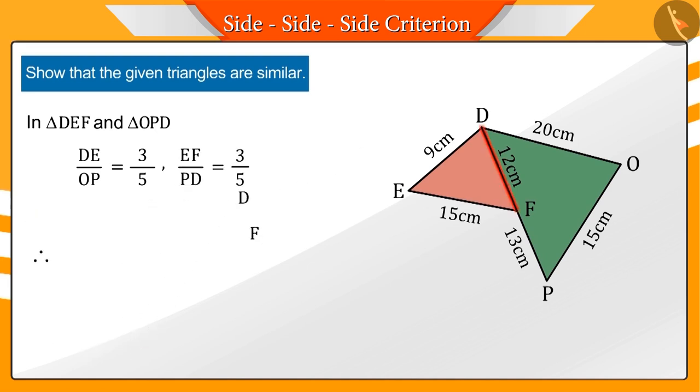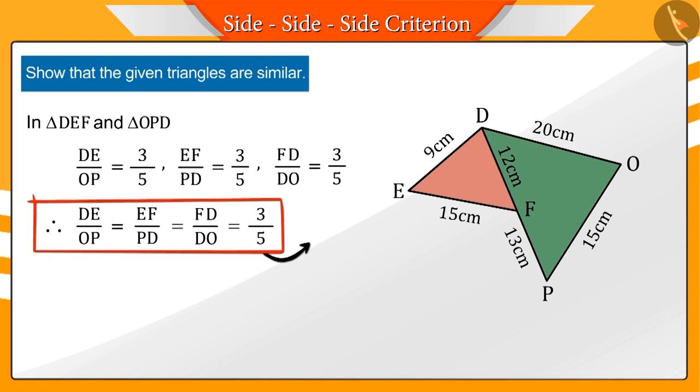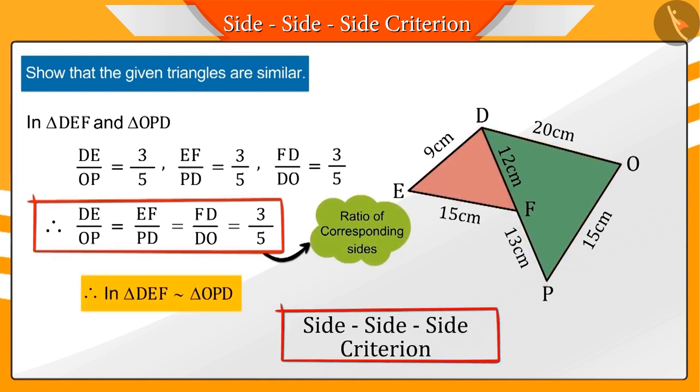Like this, the ratio of FD and DO also comes out to be equal to this value. Hence, we can say that triangles DEF and OPD are similar by the SSS criteria.